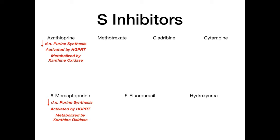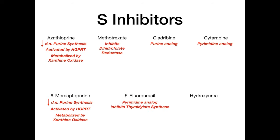Switching to cladribine and cytarabine: cladribine is a purine analog — the 'ribine' in the name hints at this. Cytarabine is a pyrimidine analog — the 'y' hints at pyrimidine. Methotrexate inhibits dihydrofolate reductase. 5-fluorouracil is a pyrimidine analog that specifically inhibits thymidylate synthase — 'uracil' in the name signals pyrimidine. Hydroxyurea inhibits ribonucleotide reductase.